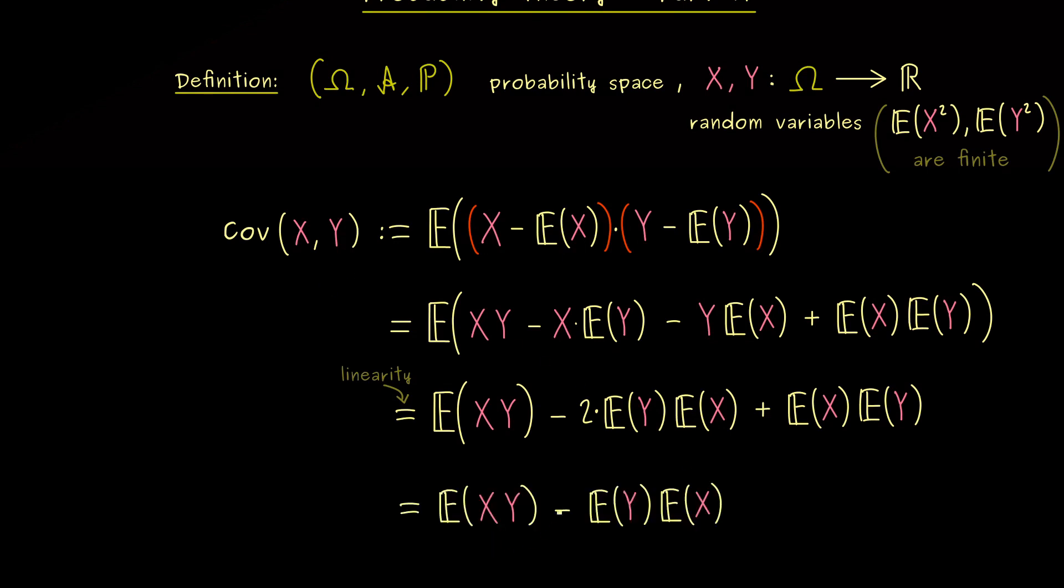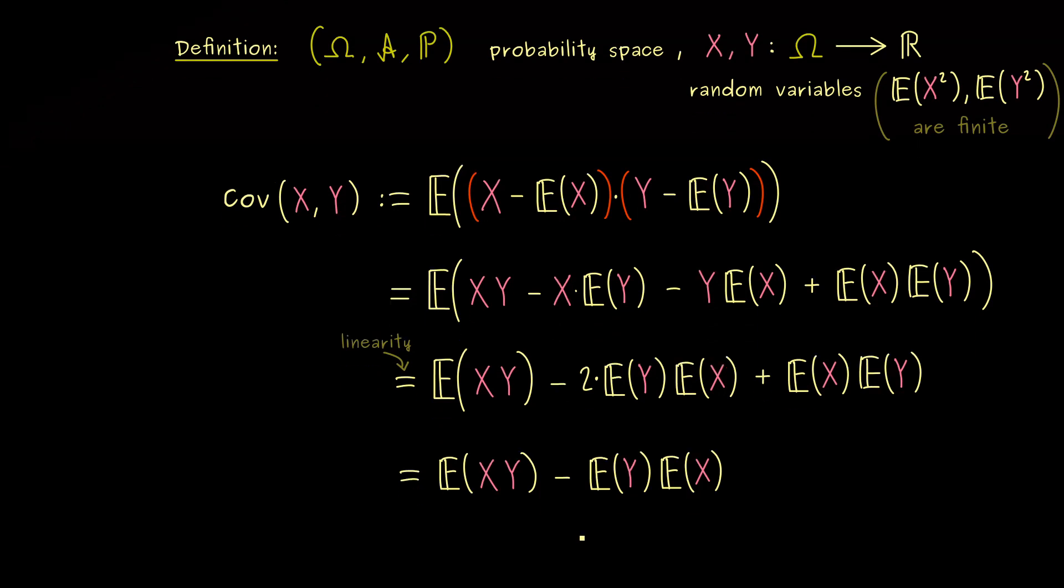So you can remember, it's the expectation of the product minus the product of the expectations. So again, by our assumption, this real number is well defined, and called the covariance of X and Y.